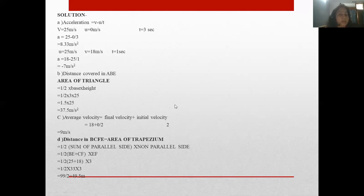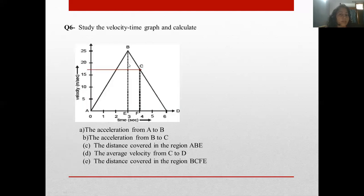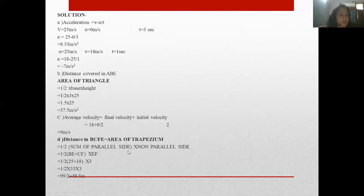Similarly, distance in BCFE. BCFE, BCF distance. Again to find distance, which area? What this area? This is the area of trapezium. Again area of trapezium formula, in the last slide I told you in derivations. What is the area of trapezium? Half sum of parallel sides into non-parallel side. So this half sum of parallel sides into non-parallel side. Parallel side is BE + CF, non-parallel side is EF. Substitute the value, answer will be 14.5 meters.